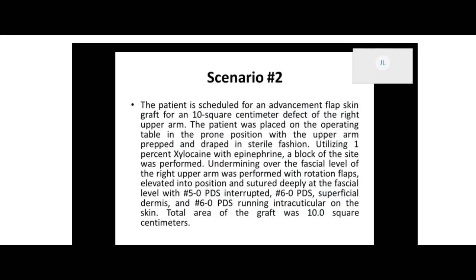Utilizing 1% xylocaine with epinephrine, a block of the site was performed. Undermining of the fascial level of the right upper arm was performed with rotation flaps elevated into position and sutured deeply at the fascial level with 5-0 PDS interrupted and 6-0 PDS superficial dermis, 6-0 PDS running intracuticular on the skin.